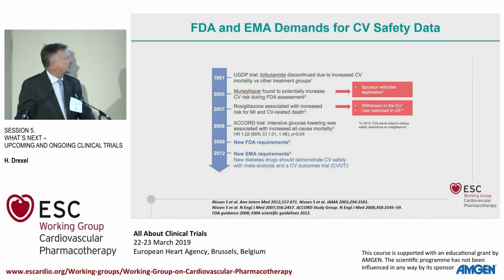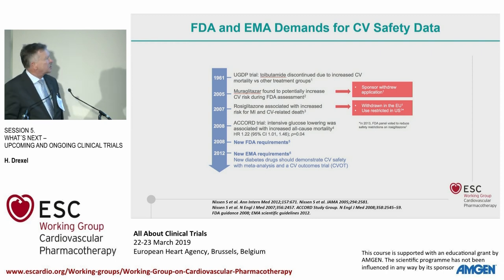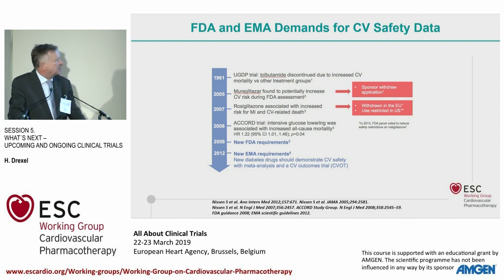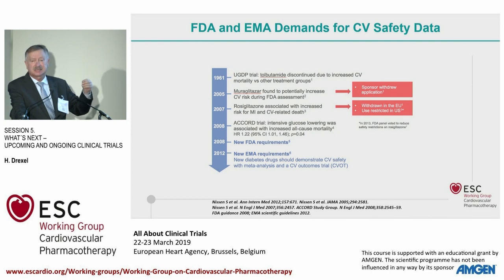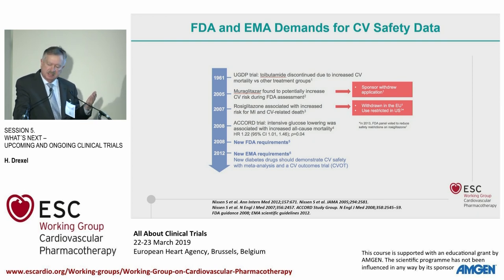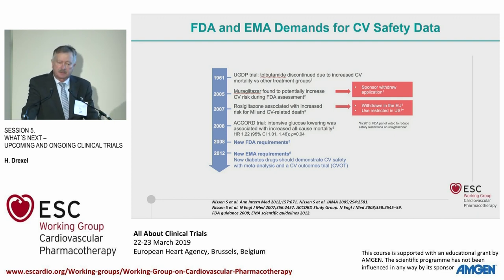Here you see a timeline from 1961 to 2012, during which several trials raised concern of harm with glucose-lowering drugs. This brought the FDA and EMA to new requirements: when you have a new diabetes drug, you have to demonstrate at least safety in diabetic patients. Because in older trials with Tolbutamide, Muraglitazar, and Rosiglitazone, there were signals that drugs not only failed to improve macrovascular outcome but actually deteriorated it — although they improved microangiopathy endpoints.